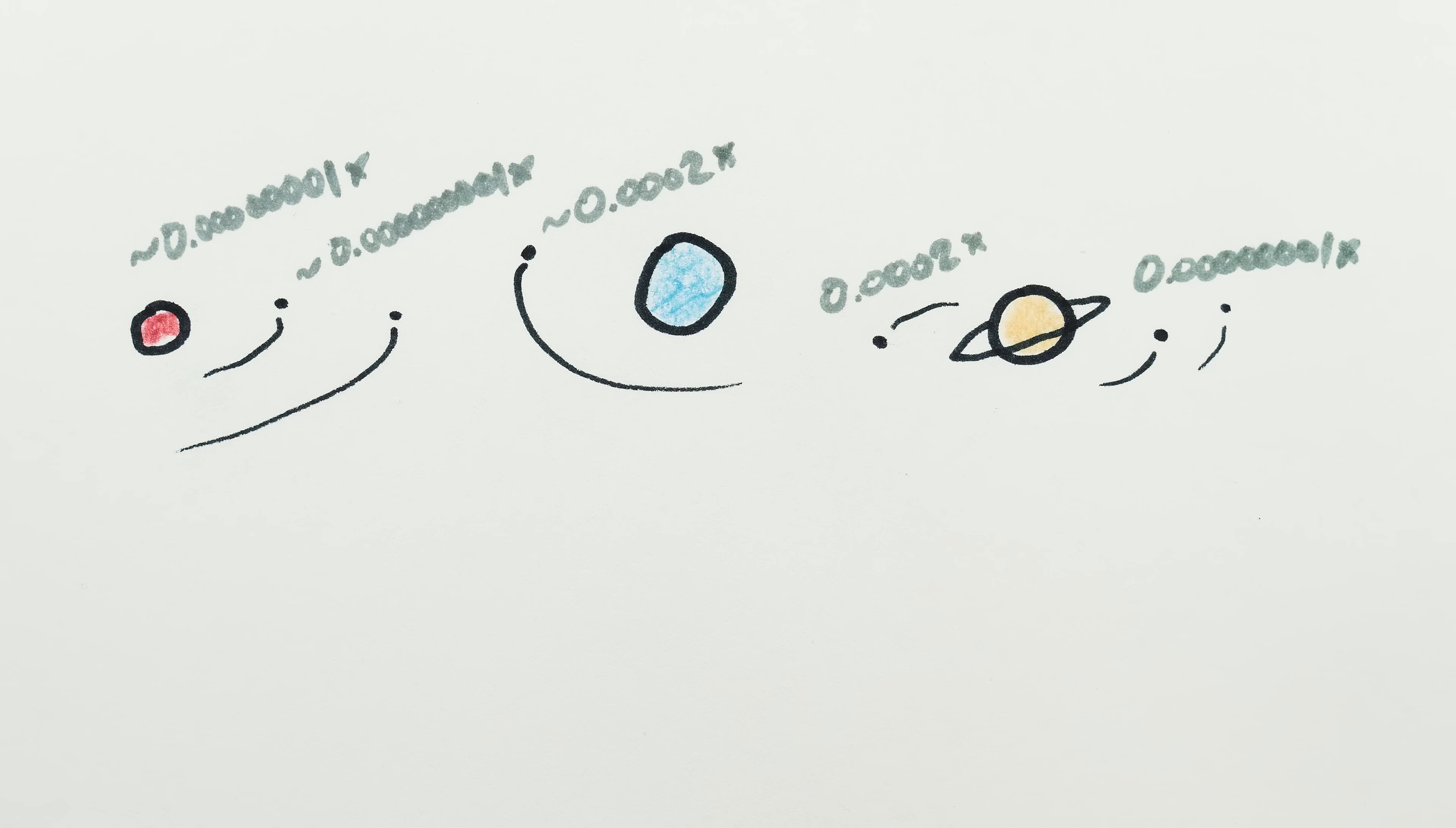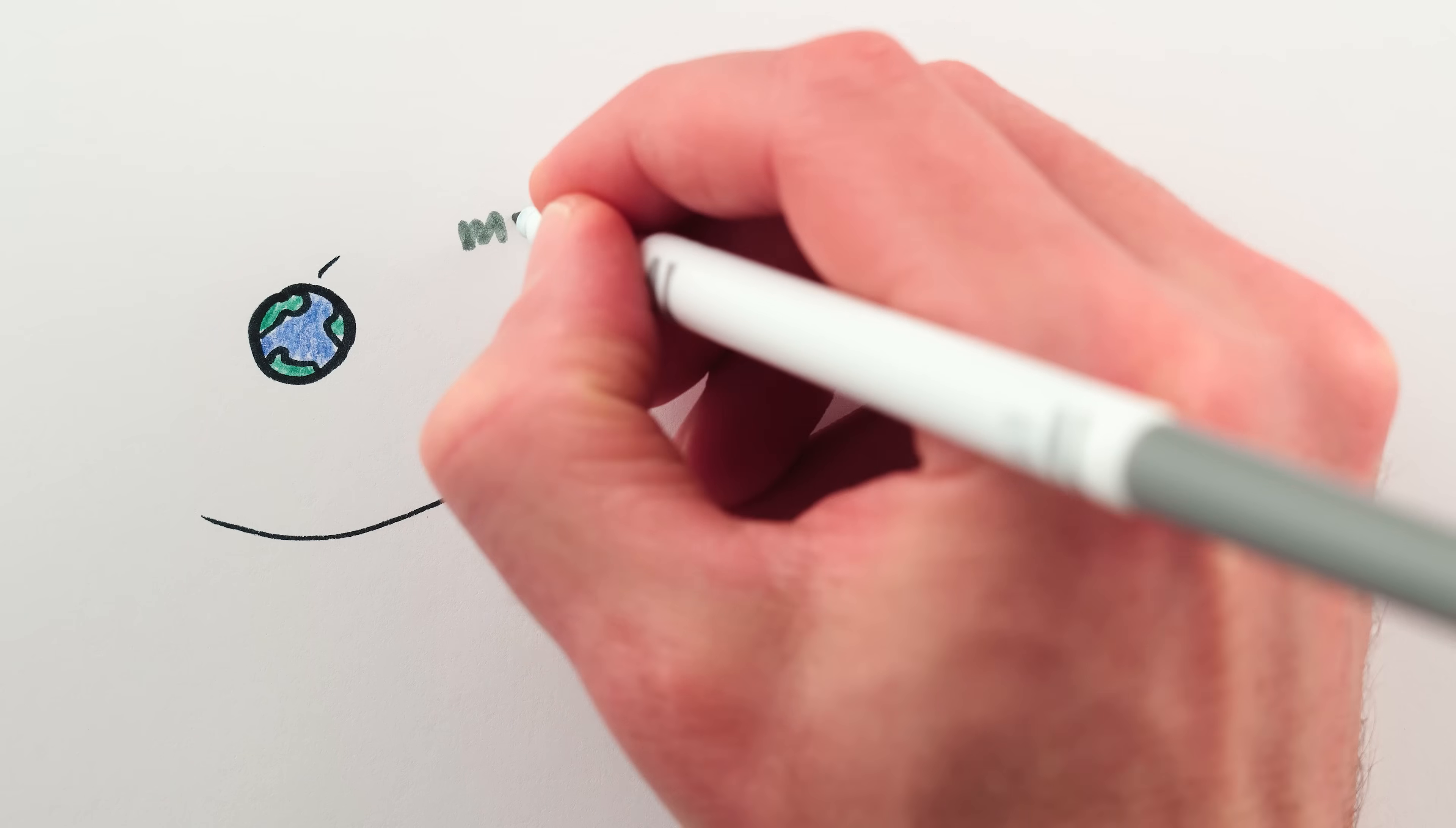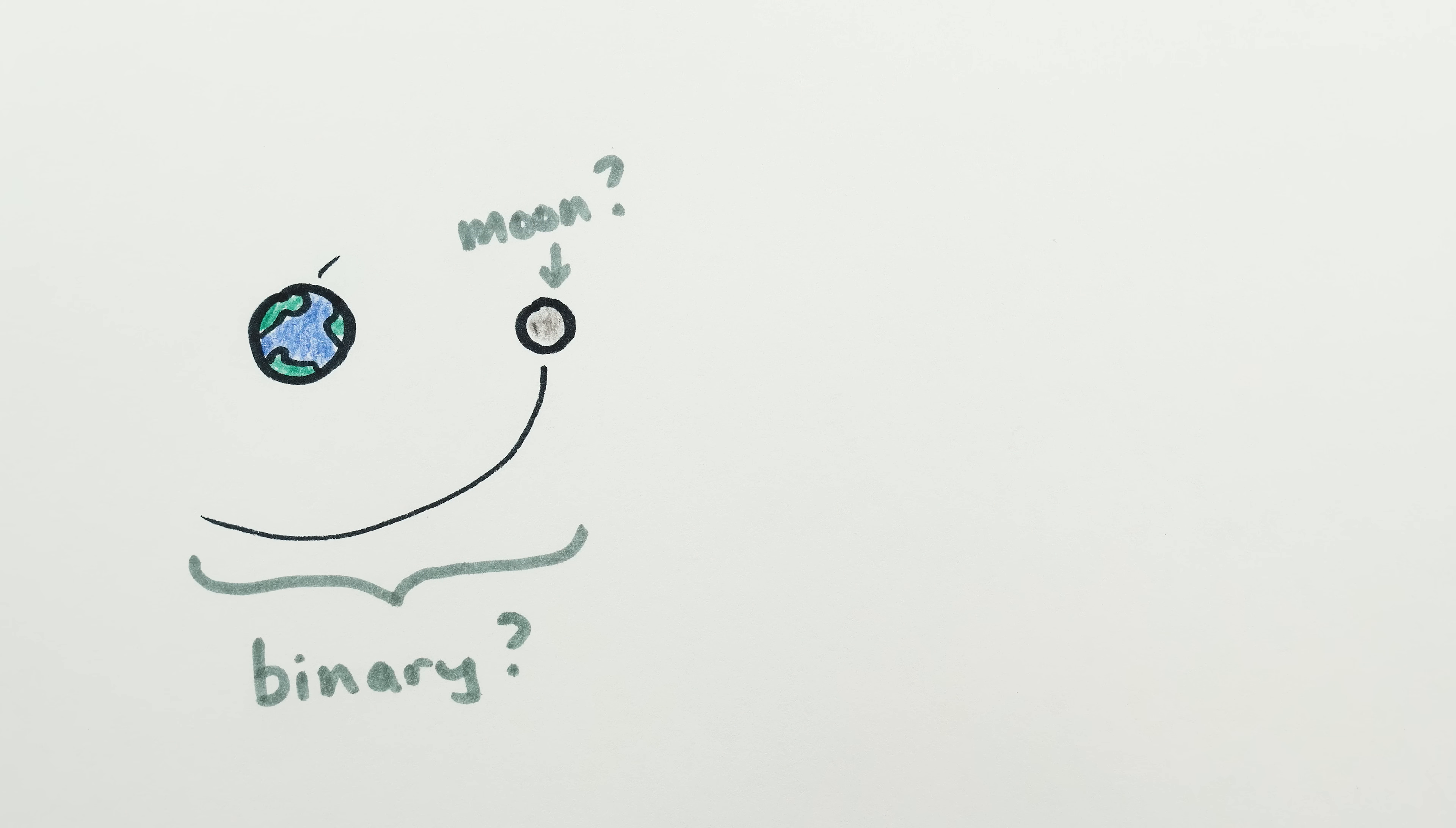Most moons in the solar system are thousands of times lighter than the planets they orbit. But the Moon is only 80 times lighter than Earth. So how do we know the moon is actually a moon and not, say, a binary planet together with Earth?